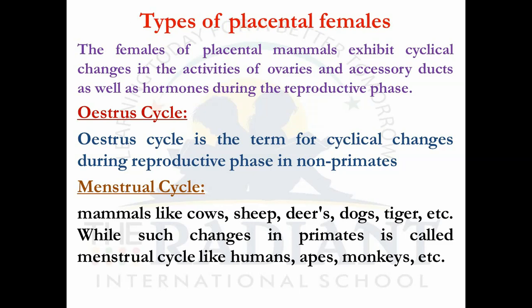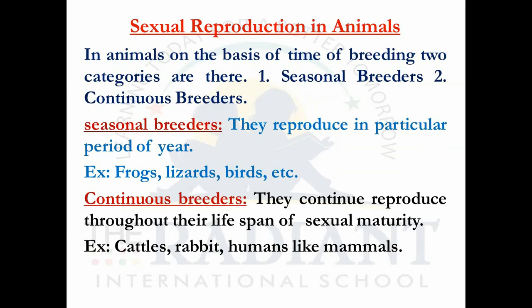The oestrus cycle is the term for cyclic changes during the reproductive phase in non-primates. Examples of primates are humans, apes, monkeys, chimpanzees, and gorillas. All other mammals are non-primates. In non-primates, the oestrus cycle represents the same reproductive cycle — the names differ because in non-primates, the cyclic changes in the uterus do not result in external secretion at the end of the cycle, whereas in primates (menstrual cycle) external secretion does occur. Hence they are named differently: oestrus cycle for non-primates and menstrual cycle for primates.